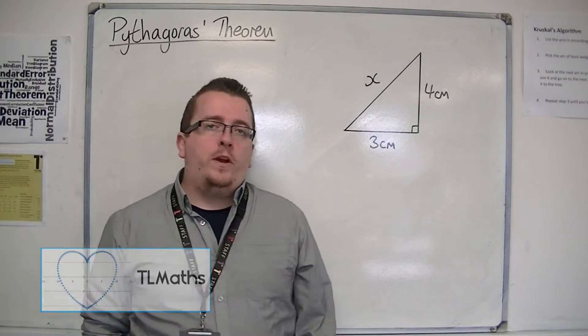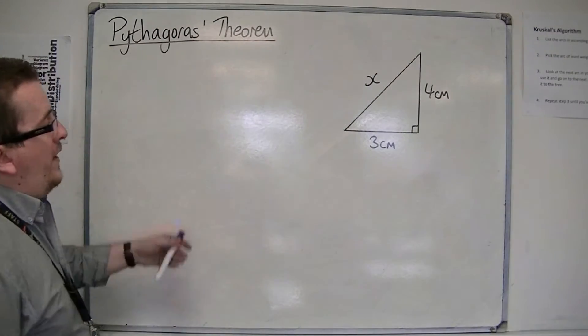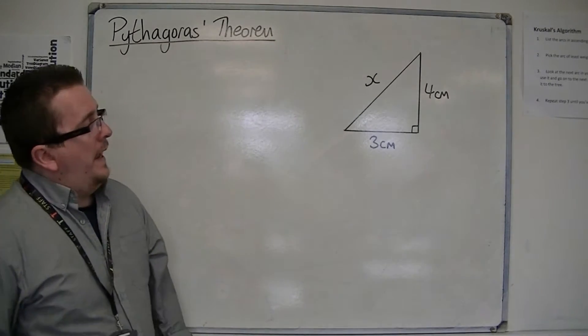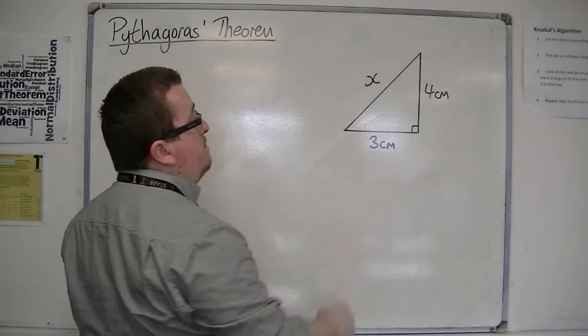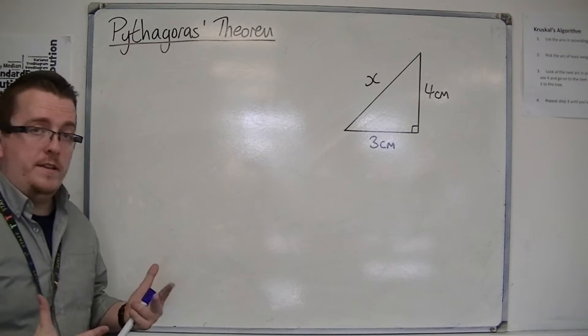Okay, so let's say we get to a question that is a right-angled triangle, and I see that I have two lengths, three and four, and I've got a missing side that I need to find.